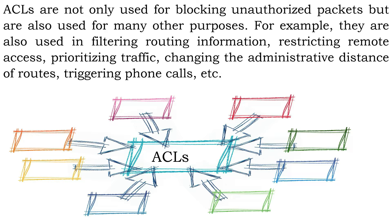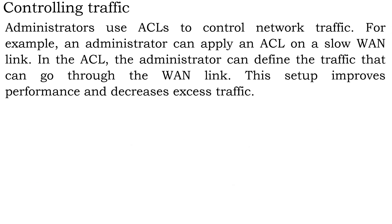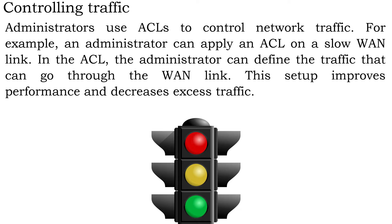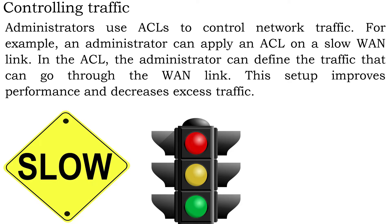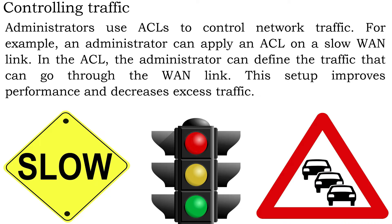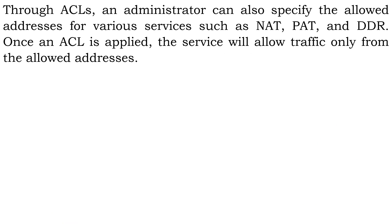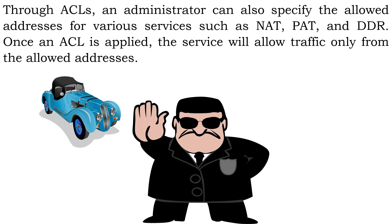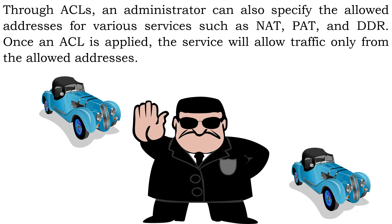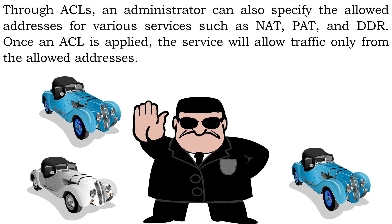Let's discuss some common uses of ACLs. Controlling traffic: administrators use ACLs to control network traffic. For example, an administrator can apply an ACL on a slow WAN link and define the traffic that can go through the WAN link. This setup improves performance and decreases excess traffic. Through ACLs, an administrator can also specify the allowed addresses for various services such as NAT, PAT, and DDR. Once an ACL is applied, the service will allow traffic only from the allowed addresses.